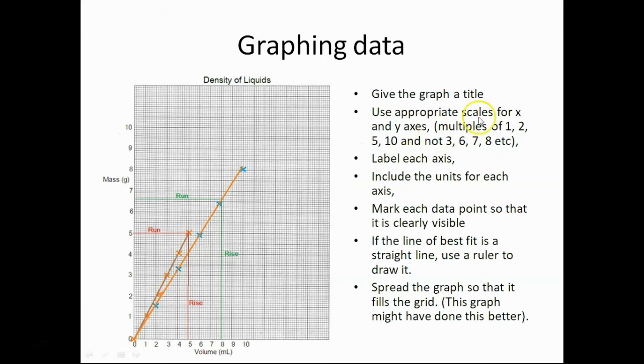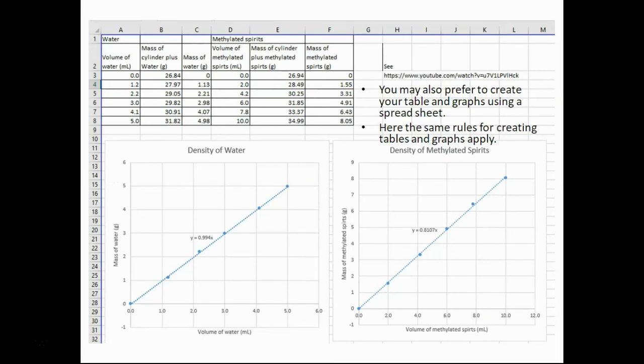When it comes to drawing the graph, a couple of things we remarked on before. We need a heading. We need a label. We need the units. We use appropriate scales for the x and y axes. We use values of multiples of 1, 2, 5, 10. And we don't use multiples of 3, 6, 7 and 8 for example. Labels, we've mentioned that, include the units. We mark each dot clearly. If the line of best fit is going to be a straight line, then we do use a ruler. Do not draw these freehand. The spread of the graph should fill the grid. In this particular case, this wasn't done terribly well. It could have been done a good deal better. Alternatively to paper, we could use a spreadsheet. And we would follow the same procedures. The same rules apply.